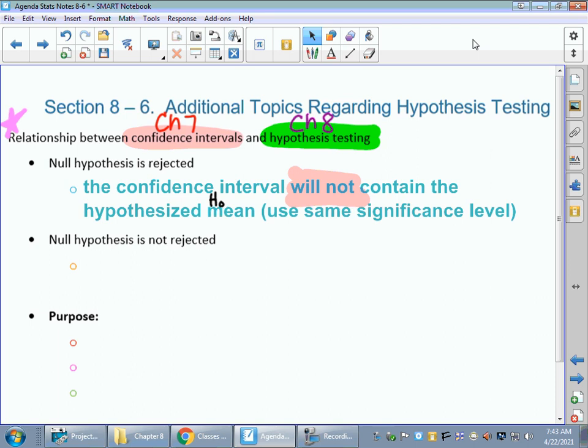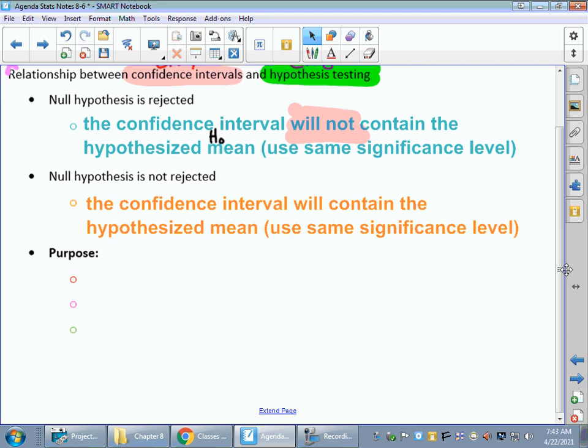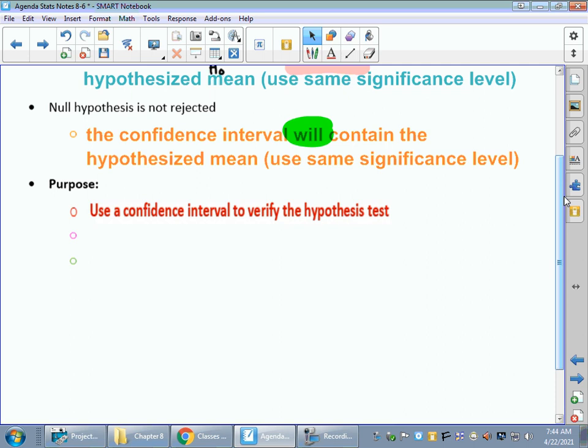So if the null hypothesis is rejected, when we make a confidence interval, the confidence interval will not contain our hypothesized mean. Will not. Our hypothesized mean is from H sub O, whatever we thought that the mean was going to be. If we did not reject our H sub O, so we like it, we like that our standard deviation is 25, that means our confidence interval does contain the hypothesized mean or proportion or whatever that was for that H sub O.